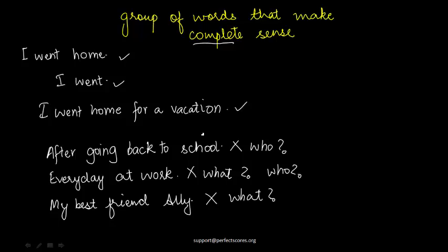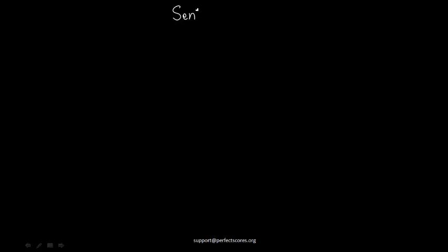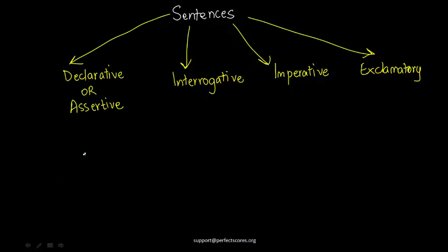Now let's look at the different kinds of sentences. Under English grammar, you can classify sentences into four major categories. These are the four major kinds of sentences you come across in everyday life. Let's start with the first and easiest one: declarative or assertive sentences. These are basic simple statements.